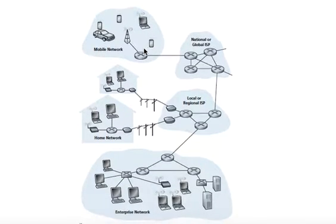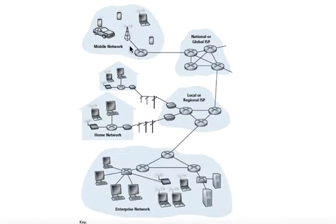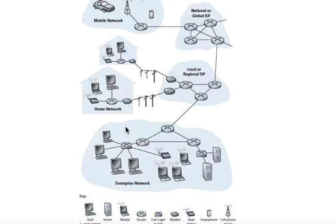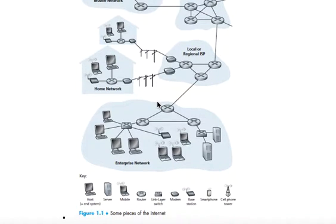Here are some pieces of the internet. You have mobile networks — the mobile network that connects to the national or global ISP, internet service provider. Then you have local or regional ISP, and then your home network connects to that. So here you have things like a base station, the modem, routers, and down here you have servers, and this is a link layer switch. Here's an enterprise network for businesses to connect to the local ISP.